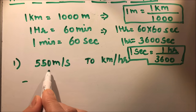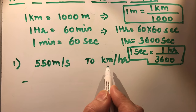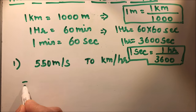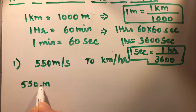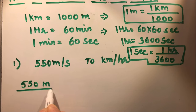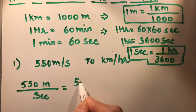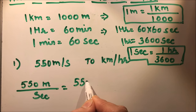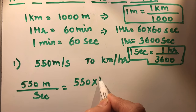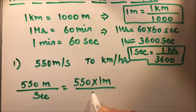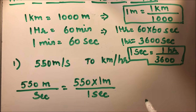Suppose we have a question to convert 550 meters per second to kilometer per hour. So we will write 550 meters over second. In place of meters we can write one meter, and in place of second we can write one second.